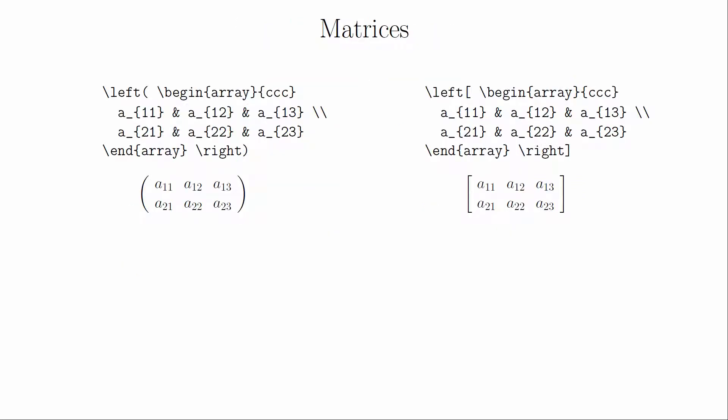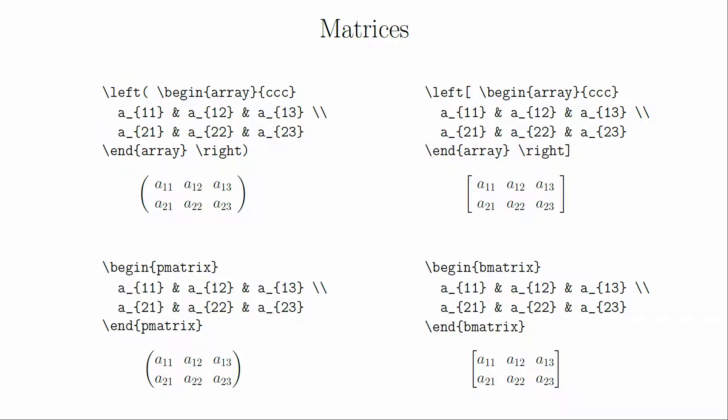The common use for arrays is to create matrices. Matrices are usually denoted by parentheses or brackets around the array. These can be created manually by using the left and right commands and the symbol of your choice. However, the brackets and the spacing for arrays built this way can sometimes be larger than necessary. Fortunately, the AMSMath package has commands to make matrices easier.